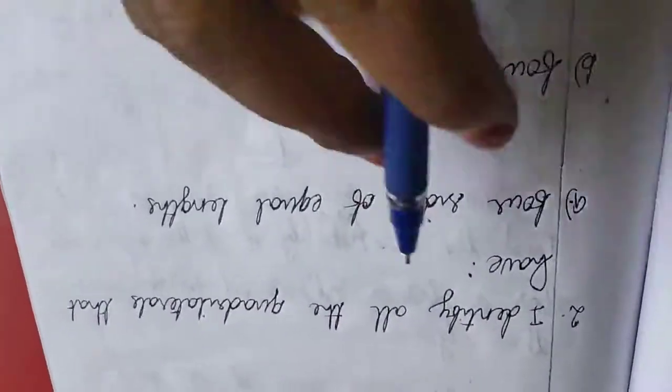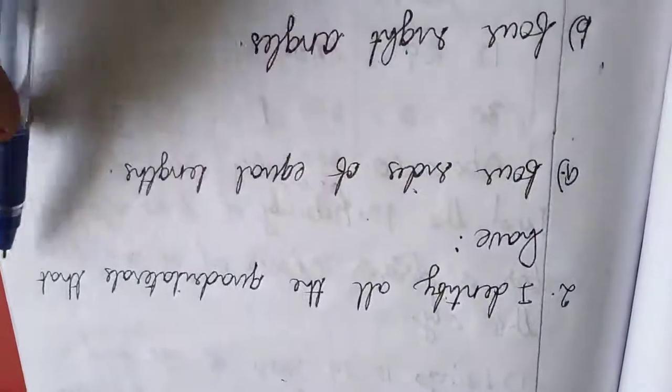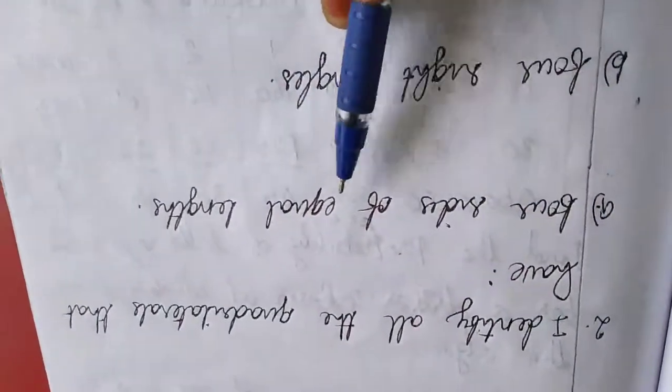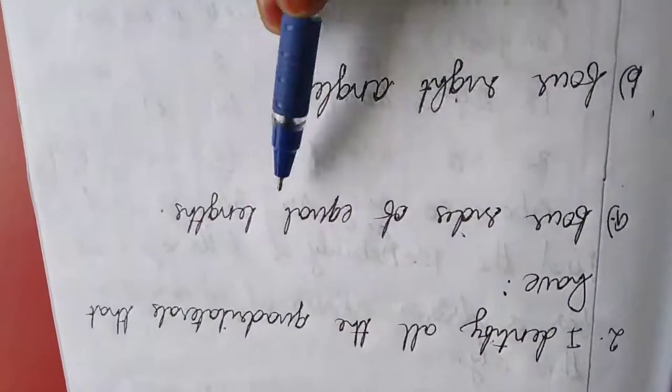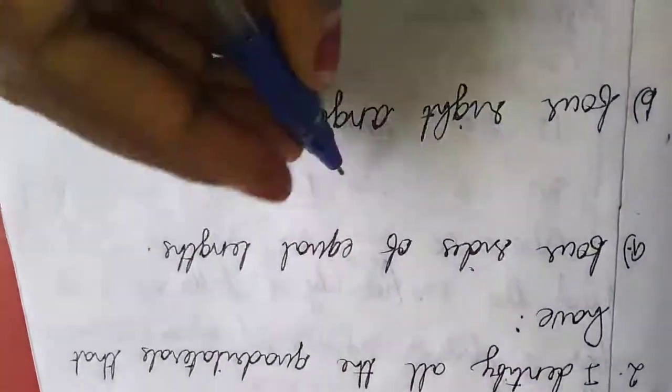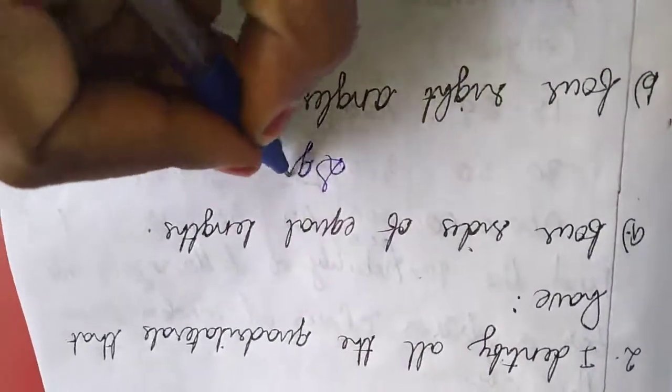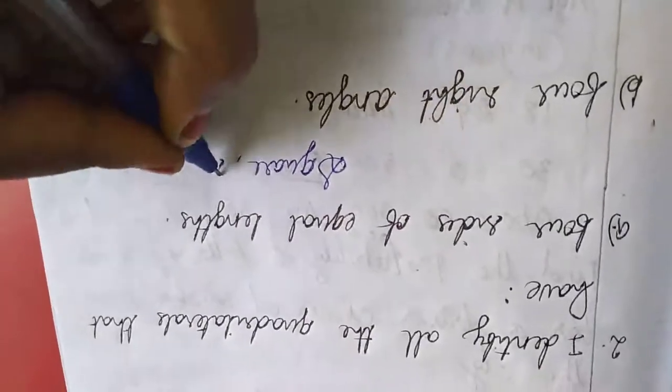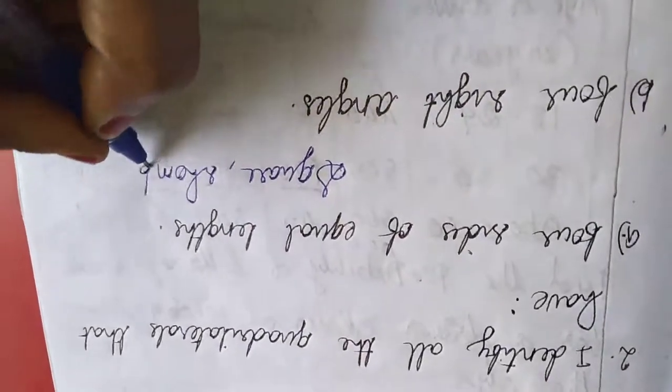Now second sum, identify all the quadrilaterals that have four sides of equal length. Four sides equal means that is square as well as rhombus.